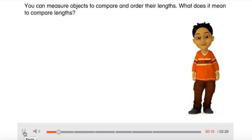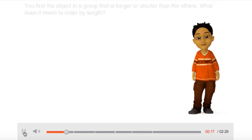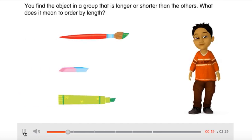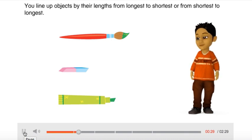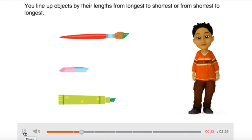You can measure objects to compare and order their lengths. What does it mean to compare lengths? You find the object in a group that is longer or shorter than the others. What does it mean to order by length? You line up objects by their lengths, from longest to shortest, or from shortest to longest.